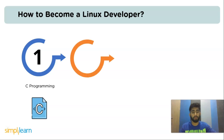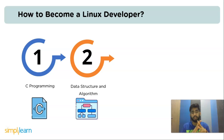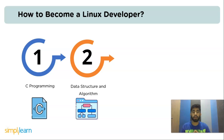The next step is to learn algorithms and data structures. To become a Linux developer you should have a fundamental knowledge of data structures and algorithms. An algorithm is basically a step-by-step approach to solve a particular problem. On the other hand, data structure works on organizing data. Both these components help programmers to solve problems efficiently.